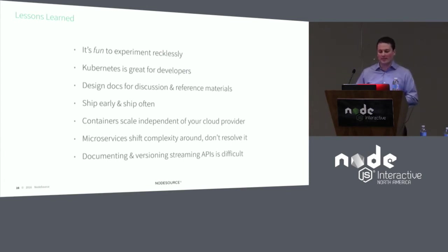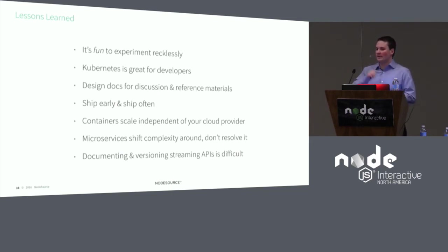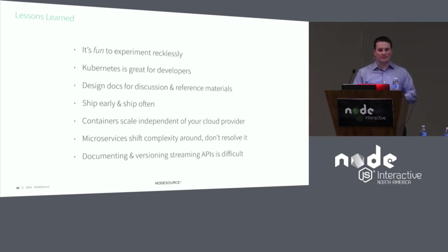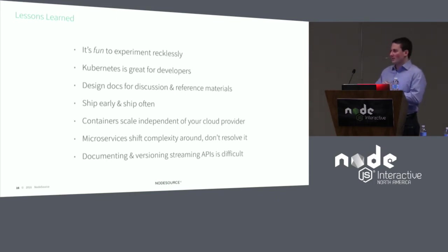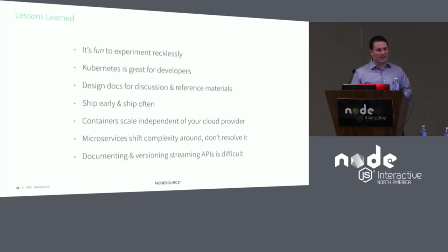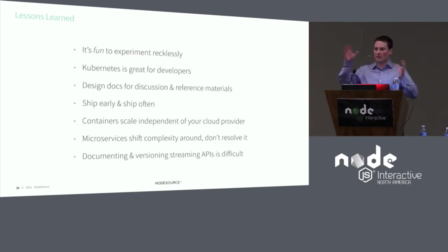Another important element: containers scale independently of your cloud provider. With a container orchestration system like Docker Swarm, Mesos, or Kubernetes, if you need to scale up your front-end application and you have available capacity, you just add more containers to existing machines. This is different from deploying new virtual machines, where you're hoping your cloud provider has capacity — if they have downtime or are out of capacity in US East 1, you can't deploy. Also, microservices are not a magic bullet — they shift complexity out of your application into the orchestration layer, which is why we need distributed tracing, monitoring, and distributed logging. Each individual service is simpler, but the overall system is still complex.